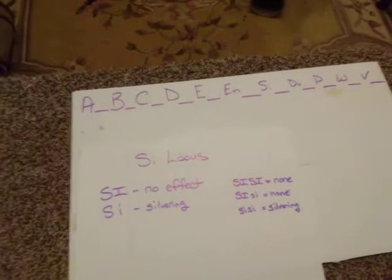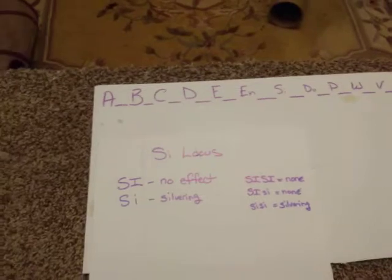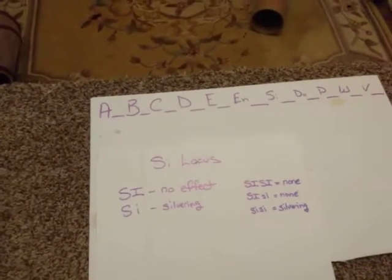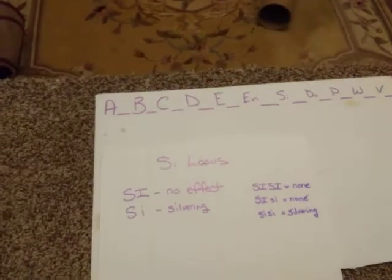The SI locus is responsible for the silver ring, or the ticking, the silver ticking we see on the ends of the hairs of a particular color.